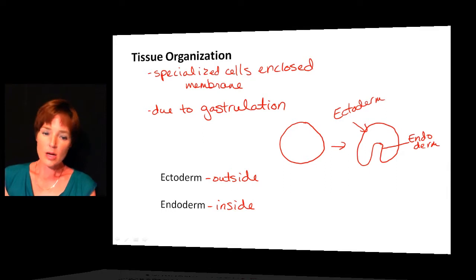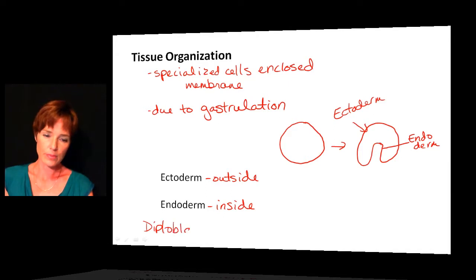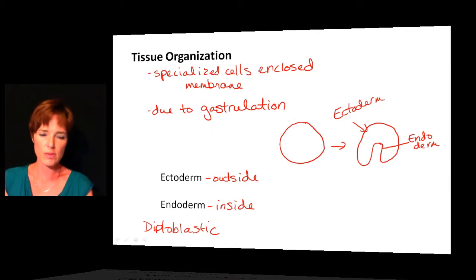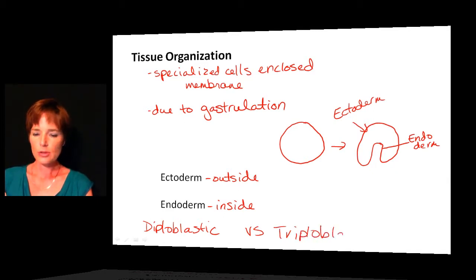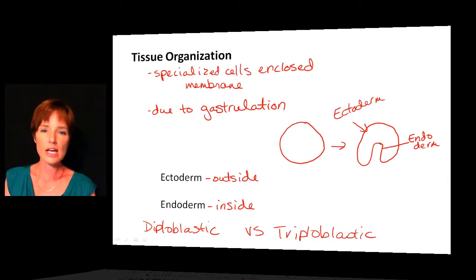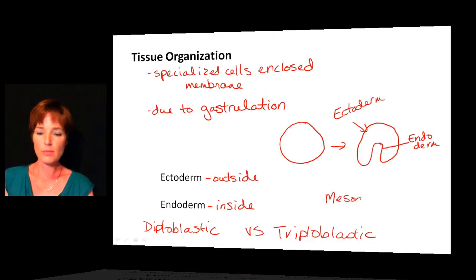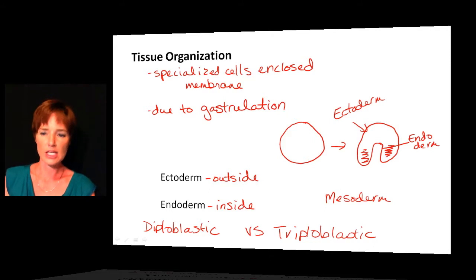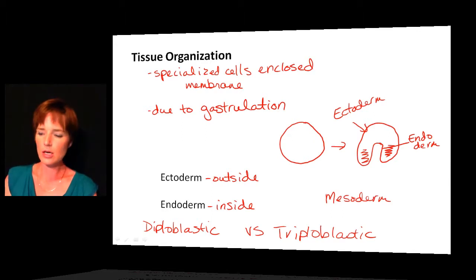We can classify organisms as diploblastic — diplo meaning two — meaning they have two layers: the endoderm and the ectoderm. We can also have what's called triploblastic — triplo meaning three — so in that case we have yet another layer called the mesoderm. The mesoderm is in the middle, developing between the ectoderm and the endoderm, and is responsible for developing into many other internal structures in the animal.